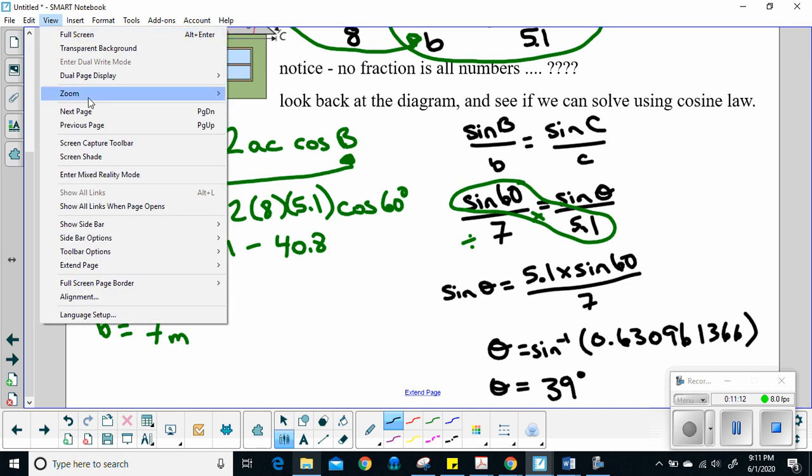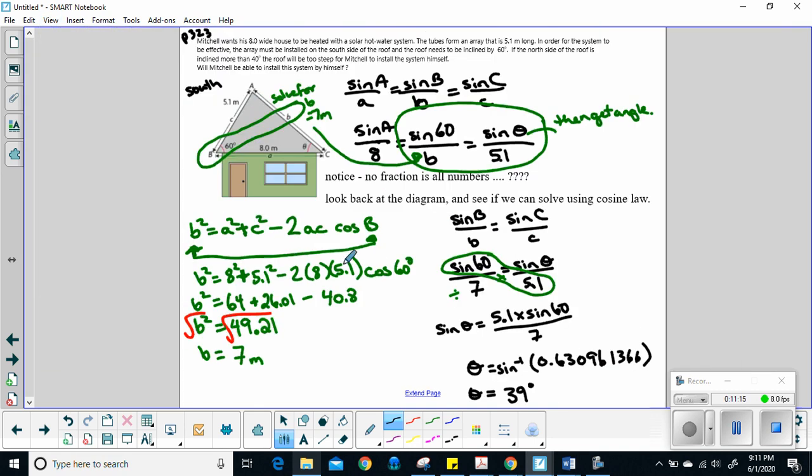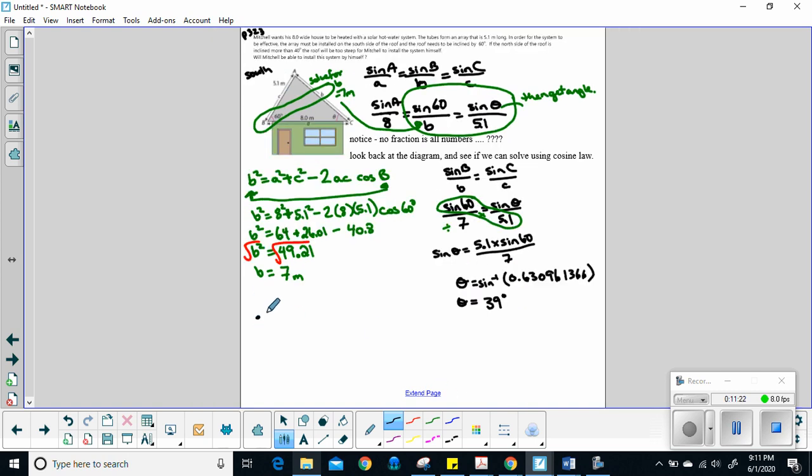Let's interpret. If it's inclined more than 40 degrees it's too steep. Is 39 more than 40? Nope. So since theta equals 39 degrees, which is less than 40 degrees, therefore Mitchell is allowed to work on the roof by himself. Yay!